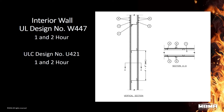Here's one of the newer versions of an interior wall: W447. It is also available for ULC as ULC U421, good for one and two hours. This is an interior wall adaptation of one of the exterior wall designs, using girts with four-foot on-center spacing as framing rather than just C wall studs. This assembly has recently been approved by UL and is in the database.